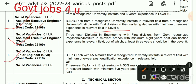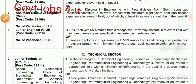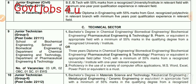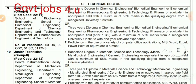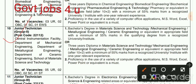For Junior Engineer Civil (post number 8), applications are invited for General Category — B.Tech with 55% marks from any university or institute, and 1 year of experience in the relevant field is required. For Junior Technician — Bachelor's degree in Chemical Engineering, Biomedical Engineering, Biochemical Engineering, Pharmaceutical Engineering, or equivalent technology with 55% marks, along with computer knowledge and good typing speed.